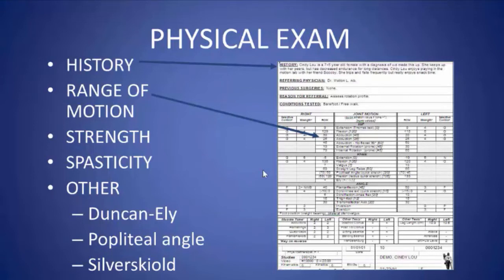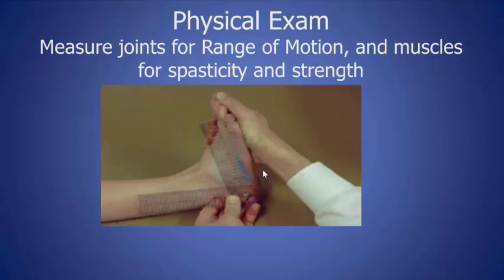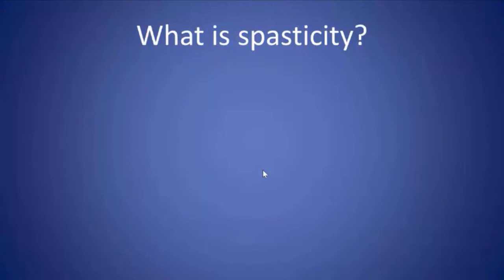The examination includes range of motion, strength by standard measures, spasticity, and other special tests. To measure range of motion, use a goniometer — your estimation is not as accurate as you may think, and if you want reliable data, use an objective measure.